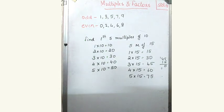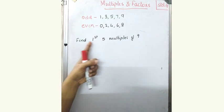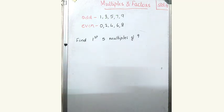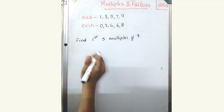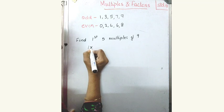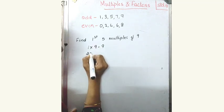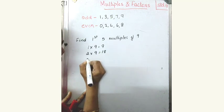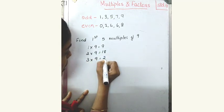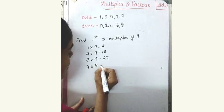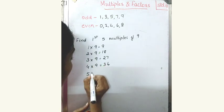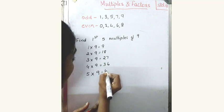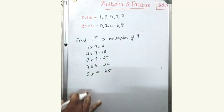If you are asked to find out the first 5 multiples of 9: 1 nine is 9, 2 into 9 is 18, 3 nines are 27, 4 nines are 36, 5 nines are 45. Like this, you can find out the multiples.